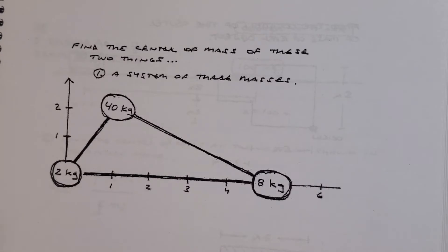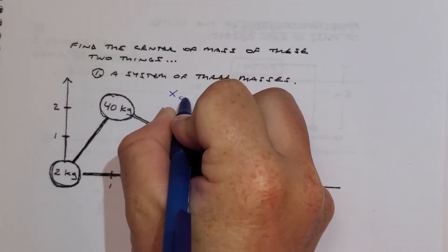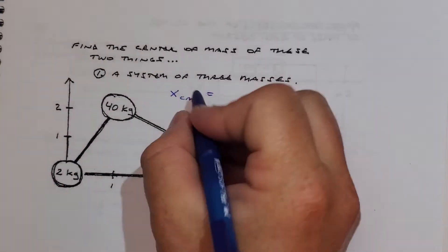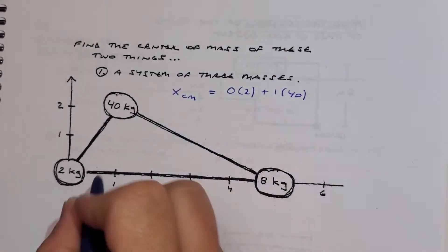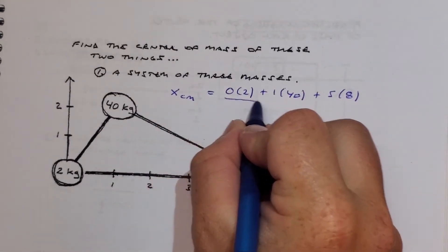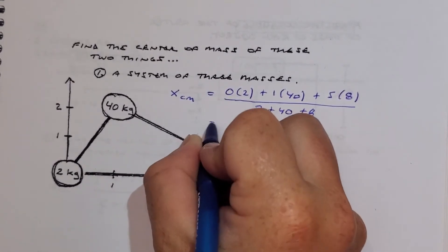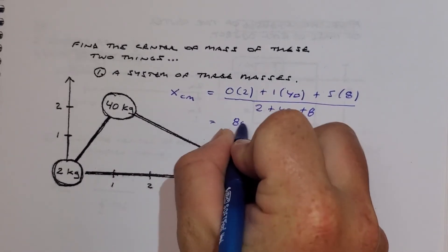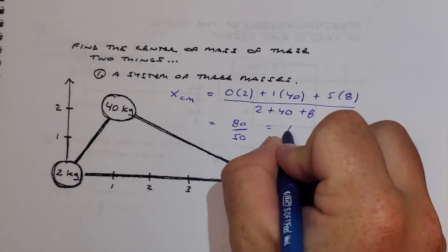So let's just do it. It goes like before — we're going to have an x center of mass and a y center of mass. Starting with x: you take each position times its mass. Position 0 is worth 2, position 1 is worth 40, and position 5 is worth 8. That's your numerator. Then the denominator is the total mass: 2 plus 40 plus 8, so divide by 50. We get 40 plus 40, which makes 80 up there — 80 over 50, which is 8 fifths, or 1.6.